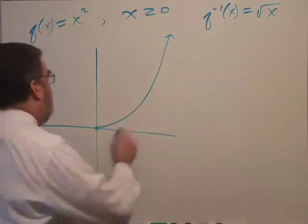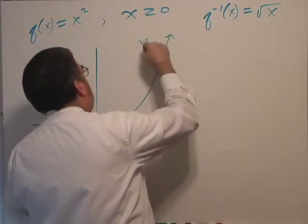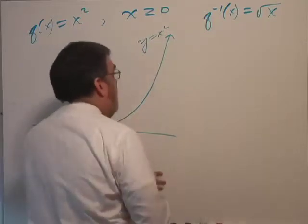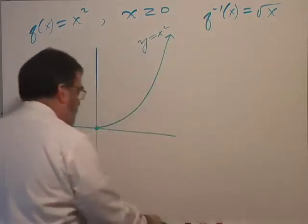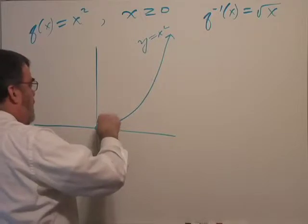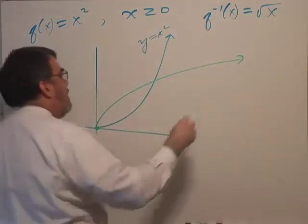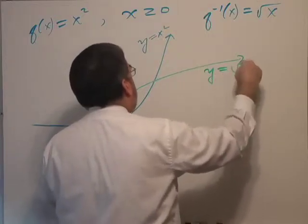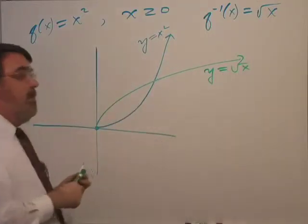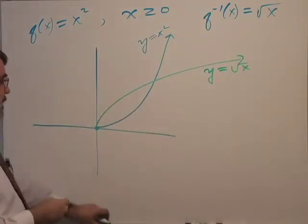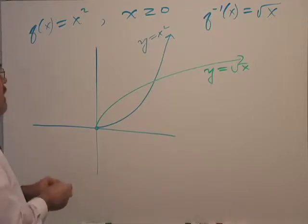Let me label this as y equals x squared. And this function ends up looking like this. So this is y equals square root of x. They're inverses to one another.